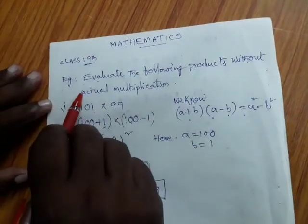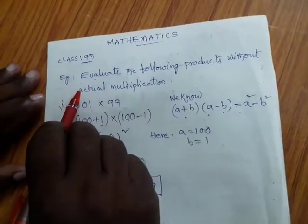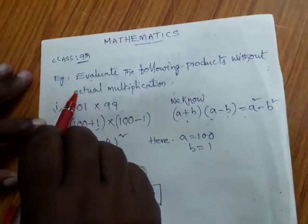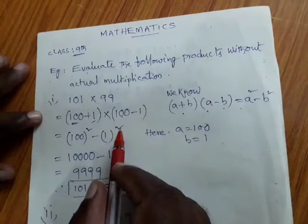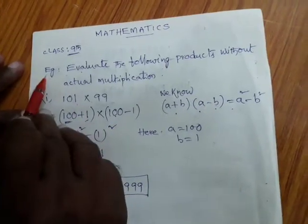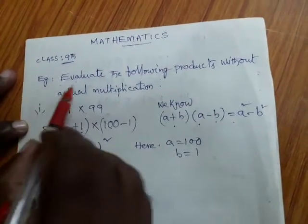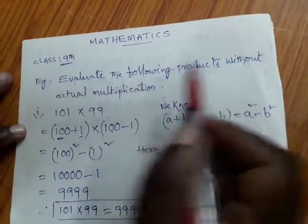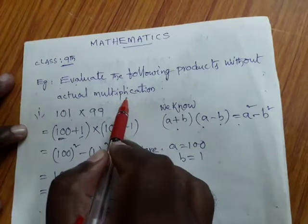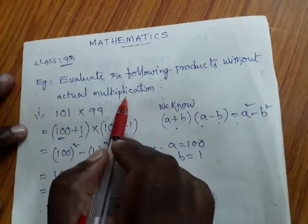Very good morning children. Today we are going to discuss one more identity. Depends upon that identity, we have to do some sums. Now see, go through one example. Evaluate the following products without actual multiplication.